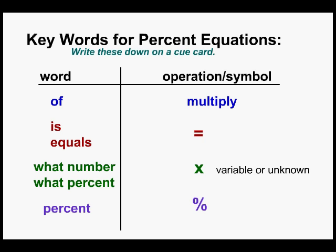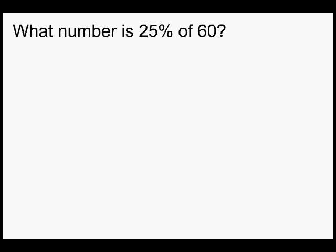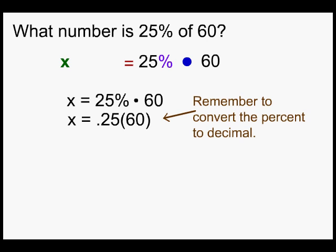The first equation is: what number is 25 percent of 60? 'What number' is X, 'is' equals, '25 percent' is itself, 'of' means to multiply, and 60 is 60. So X equals 25 percent times 60.